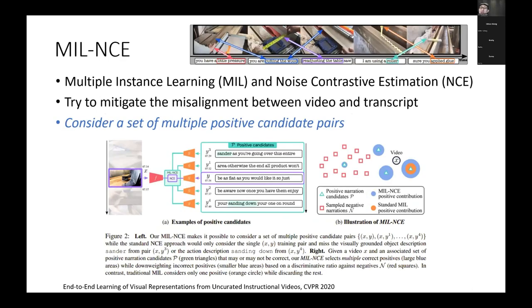One important paper is MIL-NCE. The key idea is to use multiple instance learning in this framework — collecting a set of multiple positive candidate pairs — which enables better training for video-text pre-training.